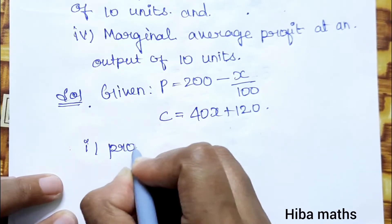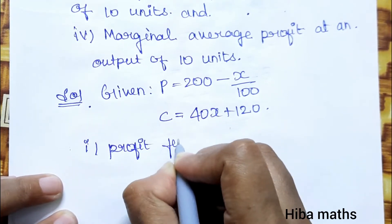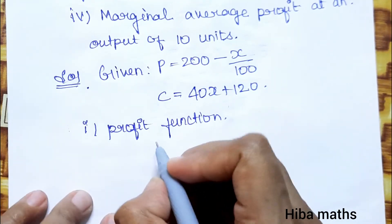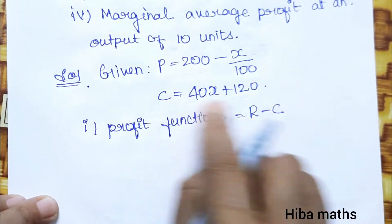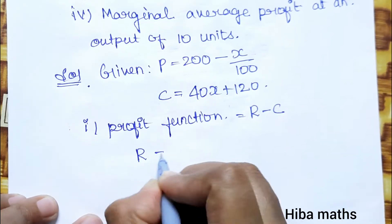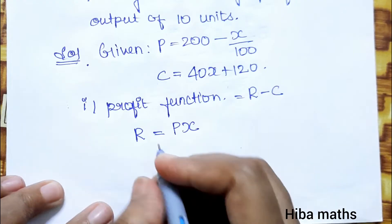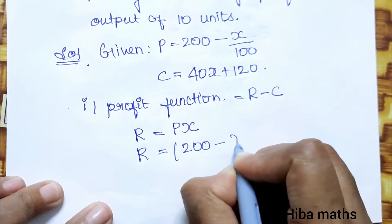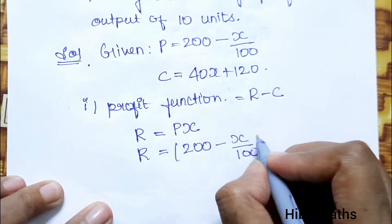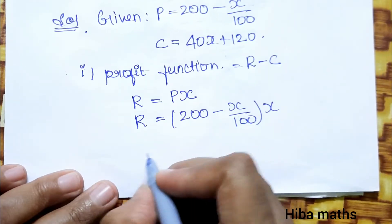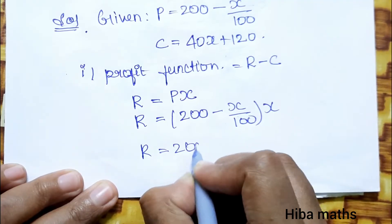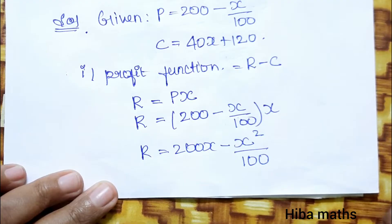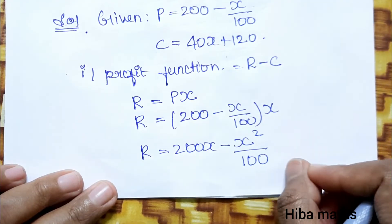First, we find the profit function. The profit function formula is R minus C. Revenue R = p × x = (200 - x/100) × x = 200x - x²/100.